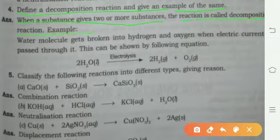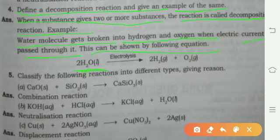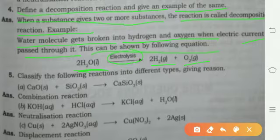Example: Water molecule gets broken into hydrogen and oxygen when electric current passes through it. This can be shown by the following equation: 2H2O liquid, through electrolysis or electric current, gives 2H2 gas plus O2 gas. This is a decomposition reaction - water decomposes into two different gases, hydrogen and oxygen.